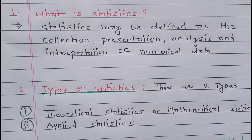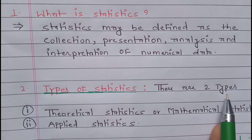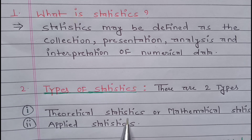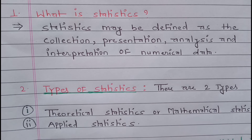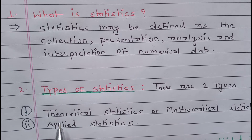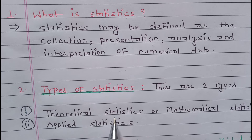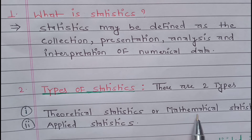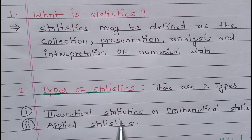Now we are going to discuss about types of statistics. There are two types of statistics: theoretical statistics, which is also called mathematical statistics, and applied statistics. Theoretical statistics is also called mathematical statistics — don't be confused.